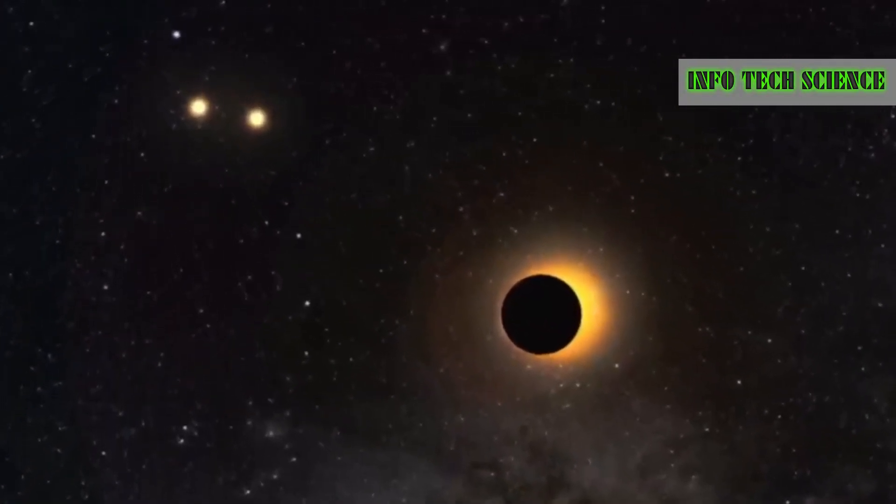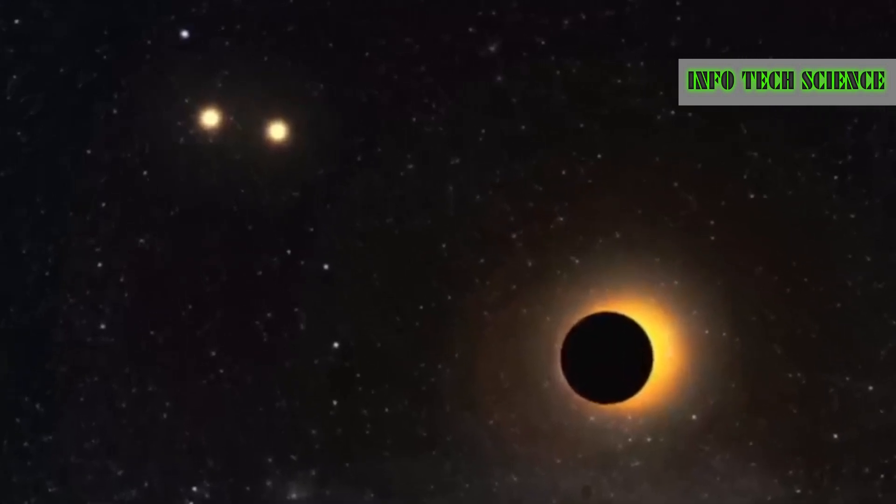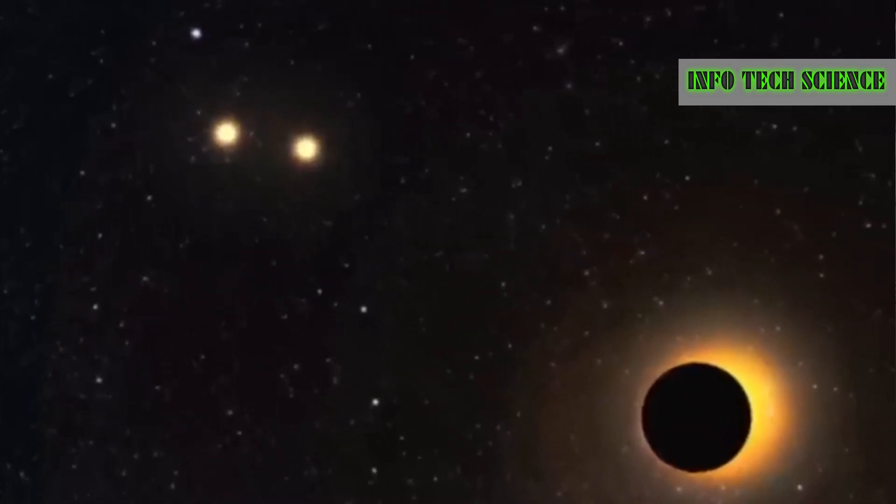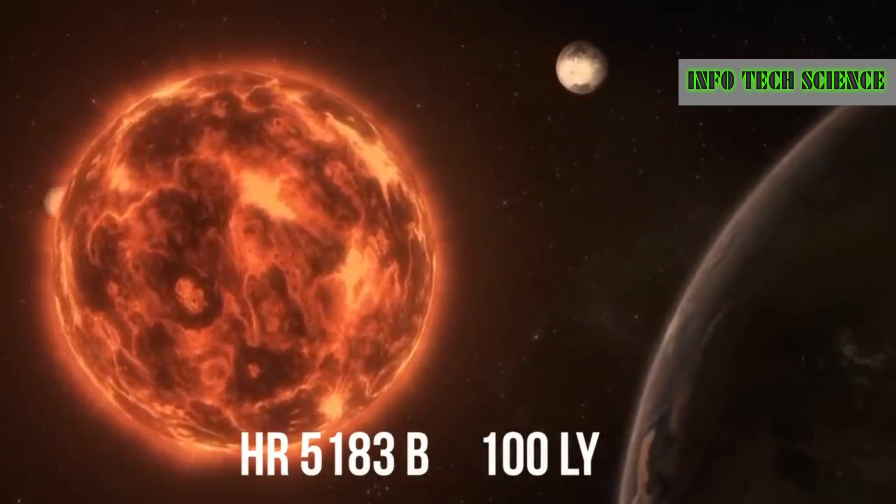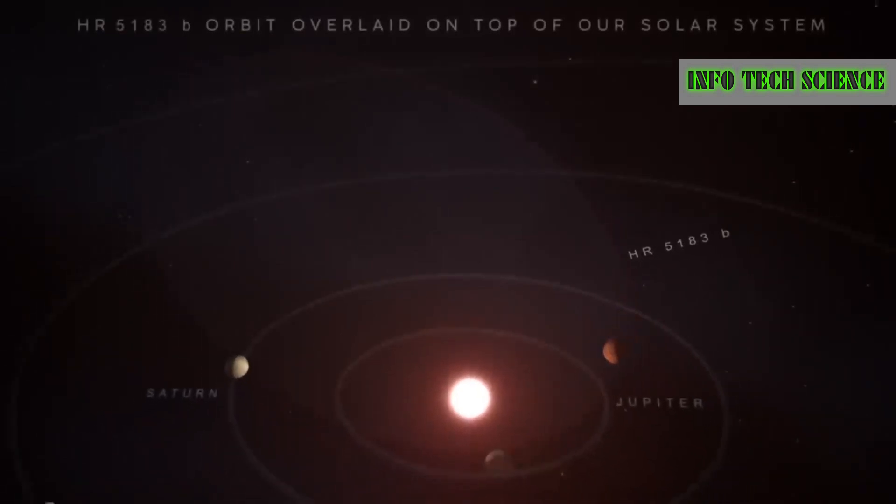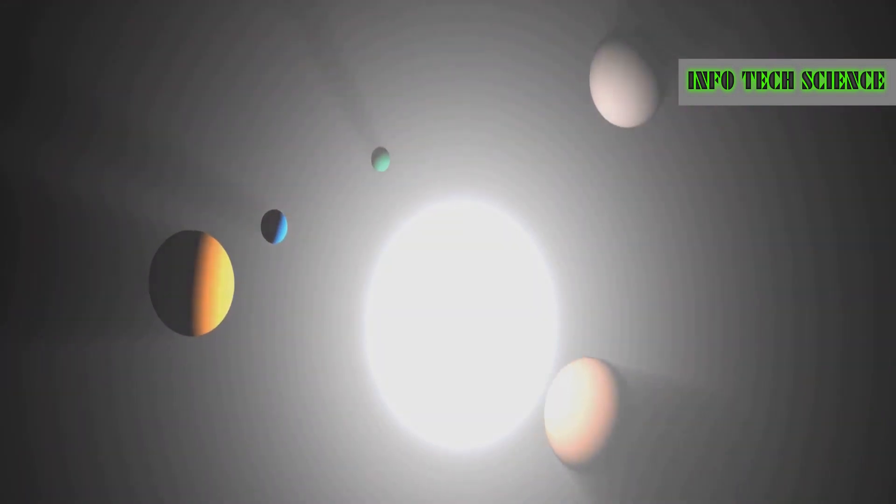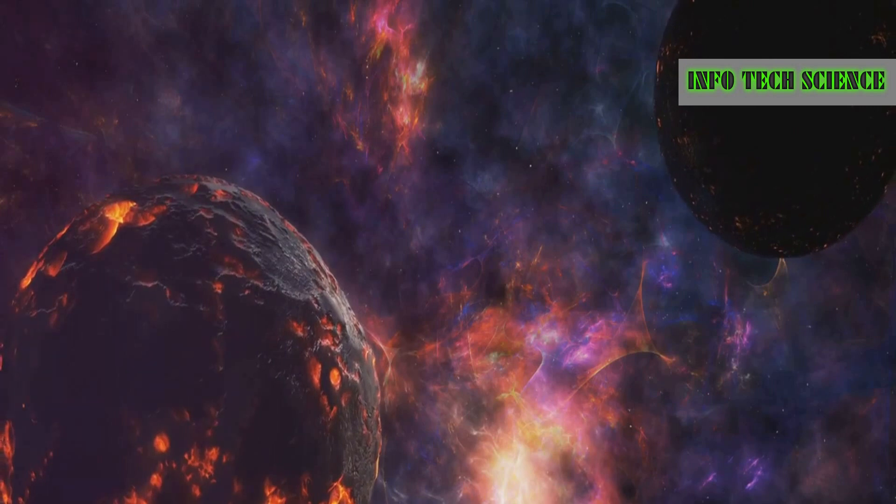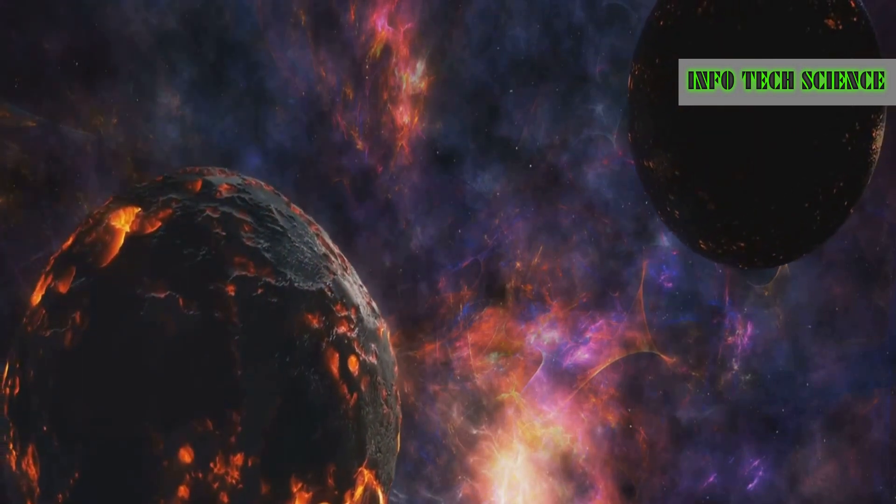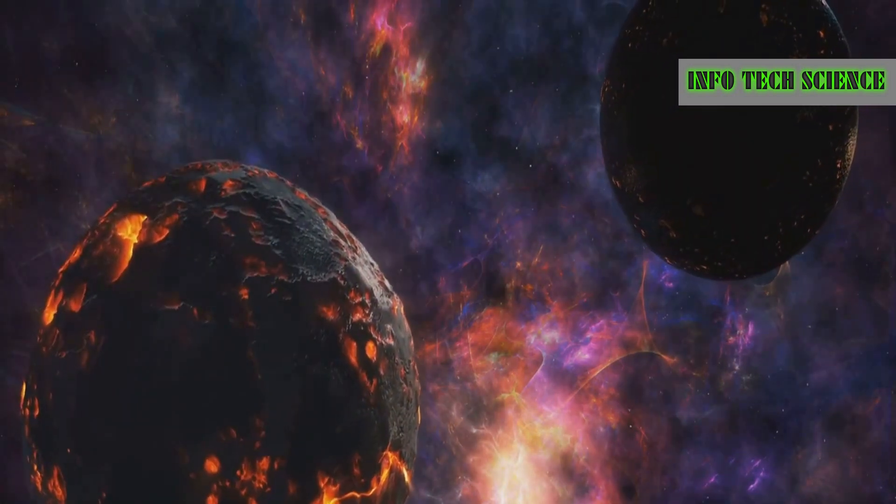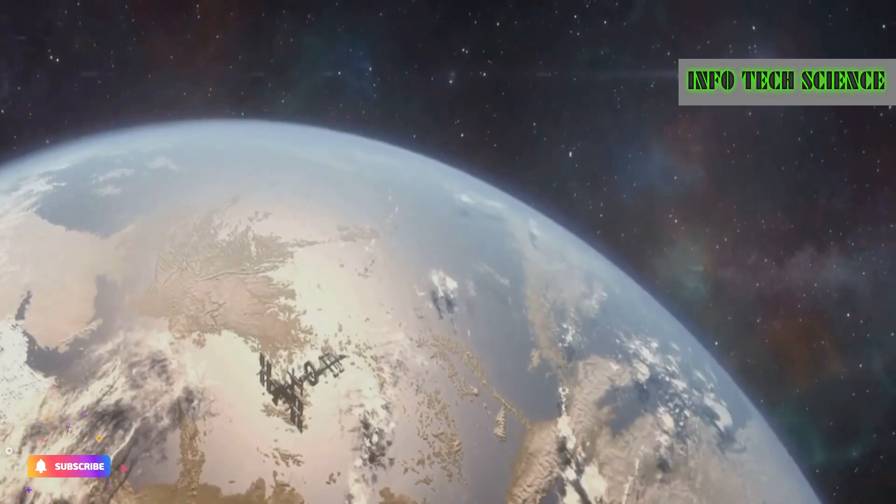Lastly, there's HR 5183b, a gas giant located 100 light years away from us. Its orbit is so eccentric that it goes extremely close to its star first and then retreats far away. All the other planets orbiting the same star behave normally. If we placed HR 5183b in our solar system, it would constantly try to crash into several other planets. For its erratic behavior, scientists nicknamed this object the whiplash planet.